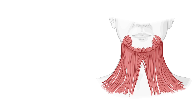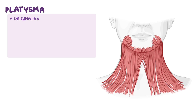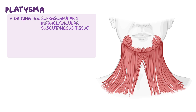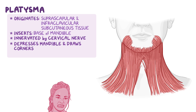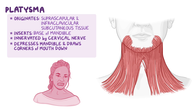Lastly, we have a broad muscle of the neck called platysma. It originates on the suprascapular and infraclavicular subcutaneous tissue. The platysma extends towards the mandible and inserts on the base of the mandible, blending with the facial muscles. It is innervated by the cervical nerve. It depresses the mandible and draws the corners of the mouth downwards to grimace, and can also tense the skin of the lower face and neck to express stress.